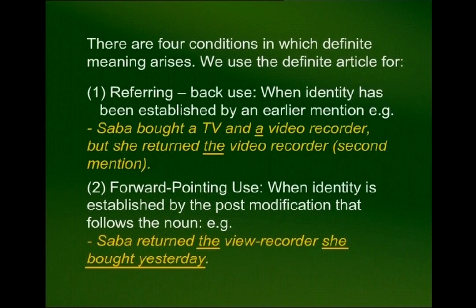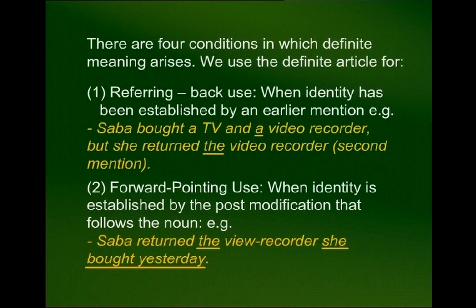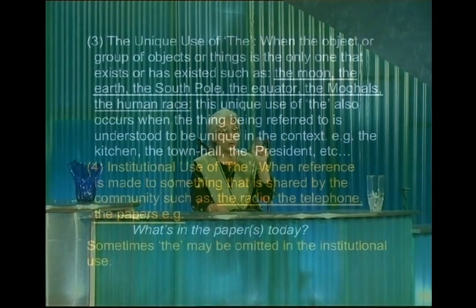The second use of the definite article is forward pointing — when identity is established by post-modification that follows the noun. For example: 'Saba returned the video recorder she bought yesterday.' Here, 'she bought yesterday' modifies the noun 'video recorder,' and we use the definite article 'the.' So we have looked at two of the four conditions: referring back, and pointing forward.